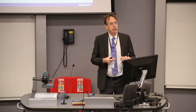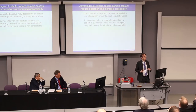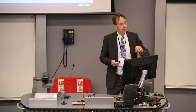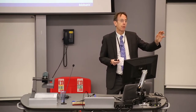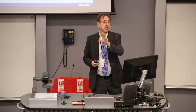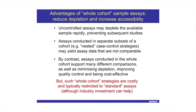The advantage of doing assays on everybody is that it protects the resource for the future — it reduces depletion and increases accessibility. If one does uncontrolled assays, it will rapidly deplete the resource. If you do case-control assays within a cohort, you can't compare cases analyzed at one time with cases analyzed at another time due to shifts in assay methodology. But if you assay everybody, you can always do a like-for-like comparison, and you can do the assays in a random sequence across the whole cohort to ensure there are no systematic biases.